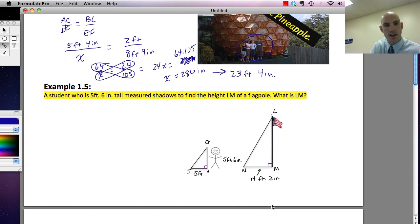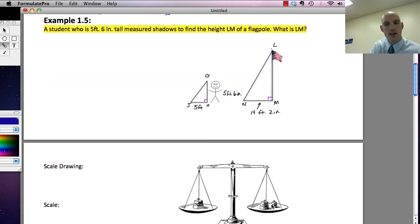So you're going to do a similar thing in example 1.5. In example 1.5, you're going to take a student who's 5 foot 6 who casts a 5 foot shadow and compare that to a flagpole that's casting a shadow of 14 feet 2 inches. So go ahead and do that one and use that as an example, use the previous as an example to figure out this one.